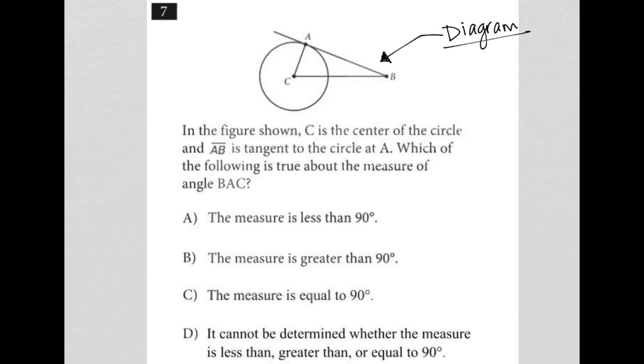Nothing's labeled here. I do see that I have a circle. Looks like the center is at C. I have a triangle A, C, B here. It looks like A, B is tangent to the circle.